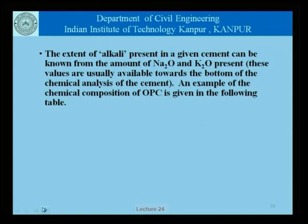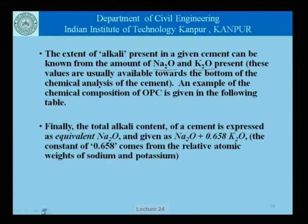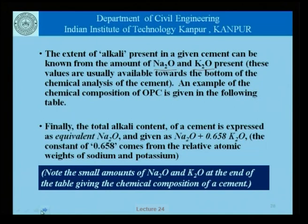We should understand the extent of alkali present in a given cement, which is known from the amounts of sodium oxide and potassium oxide present in the cement — these values are usually available in the chemical analysis of the cement. The total alkali content of the cement is expressed as equivalent sodium oxide, given as Na₂O + 0.658 × K₂O, the constant 0.658 coming from the relative atomic weights of sodium and potassium. This helps us understand the total amount of alkali present in the cement.